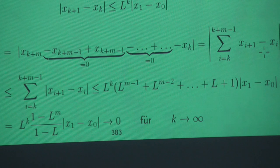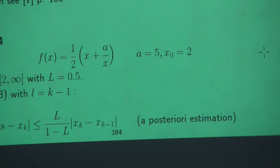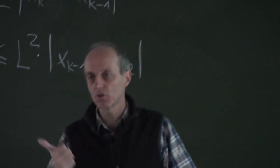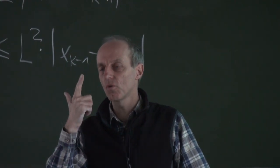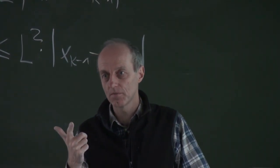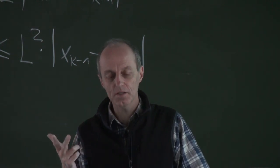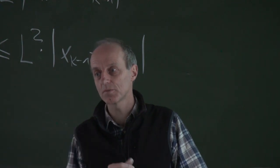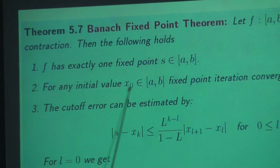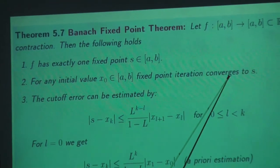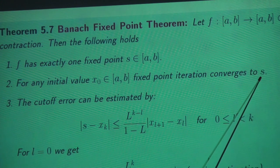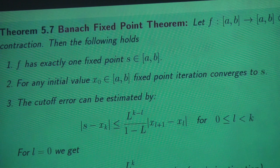Because it converges, there is a limit. We have now proven the first part of property two. We still have to prove that it converges to the fixed point, and that this fixed point is unique — that's property one. Those are what's still missing.